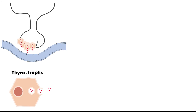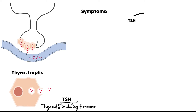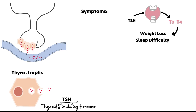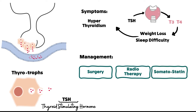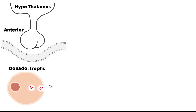The fourth type involves thyrotrophs, which secrete TSH — thyroid stimulating hormone — which stimulates the thyroid to secrete T3 and T4. T3 and T4 are responsible for weight loss, increase in metabolism in general, and sleep difficulty, with symptoms similar to hyperthyroidism. The management is surgery as first line, radiotherapy as second, and somatostatin is also effective with this type.